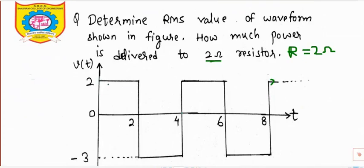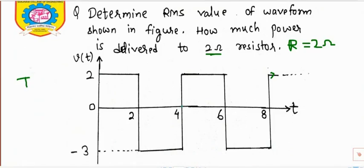To solve this type of numerical, the first thing is you should identify the time period of the signal. As you can see, we have one positive cycle, then a negative cycle, then again a positive cycle. At t = 0 we have a positive cycle, and we get the positive cycle again at t = 4. So after 4 seconds we have a repetition — the period of the signal is 4 seconds.